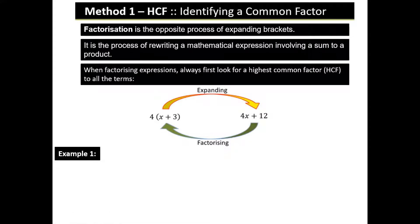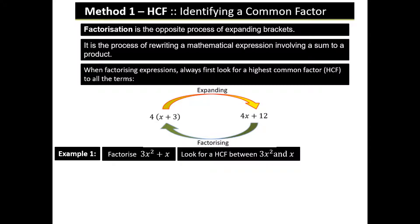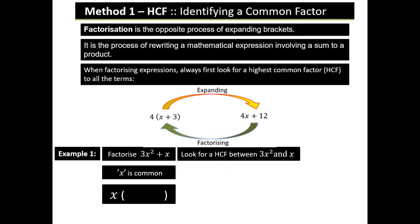Example 1: factorize 3x² + x. What we need to look for is the highest common factor between 3x² and x. We know that 3x² is 3 times x times x, and x is 1 times x. So x is common in this algebraic expression, and we can take x out. Once you have found the variable or variables that are common, you put that outside — this is the sum or algebraic expression.